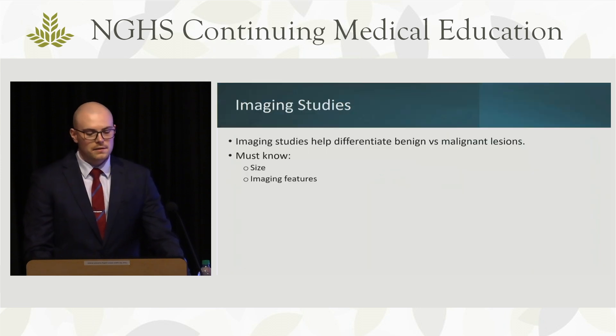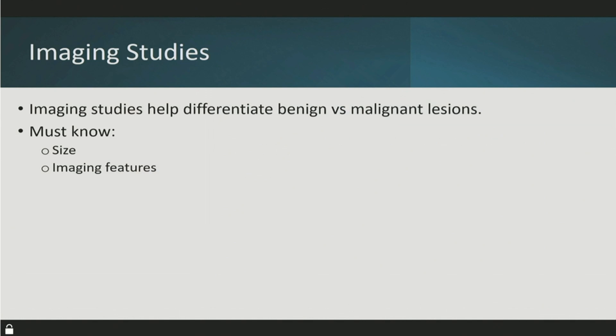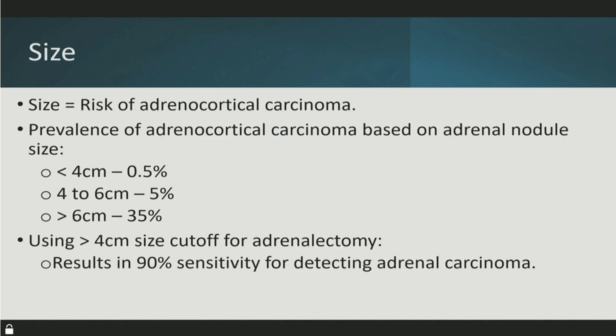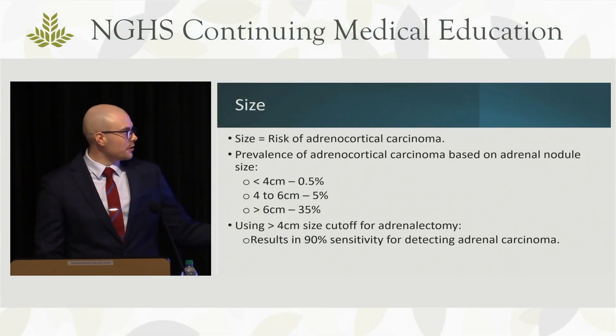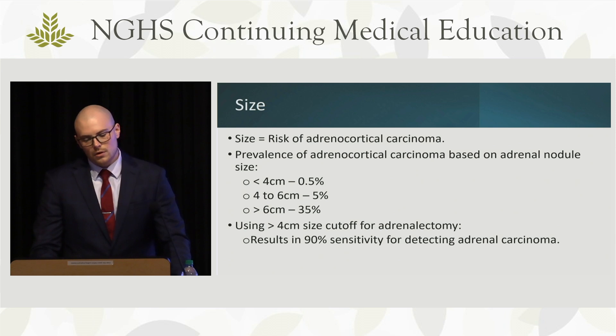The two main imaging criteria are size and imaging characteristics. Size relates to adrenal cortical carcinoma, or ACC. If it's less than 4 centimeters, the chance of cancer is less than 1%. From 4 to 6 centimeters, there's a 5% risk. Greater than 6 centimeters carries a 35% rate for adrenocortical carcinoma. The 4-centimeter cutoff gives you 90% sensitivity for detecting adrenal carcinoma. But you take this with a grain of salt — a 4.5-centimeter lesion in an elderly patient with benign features can be observed.